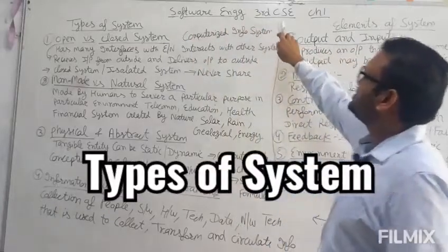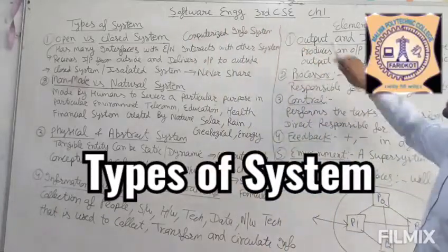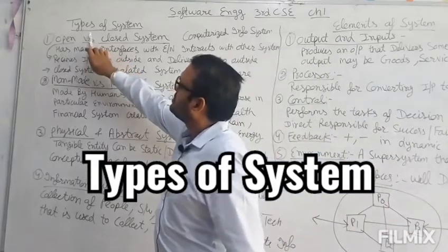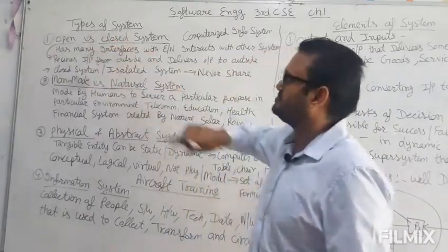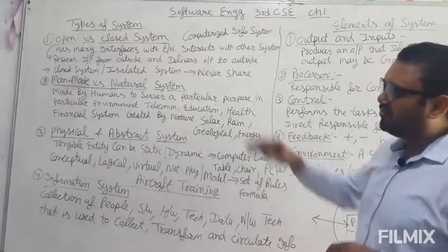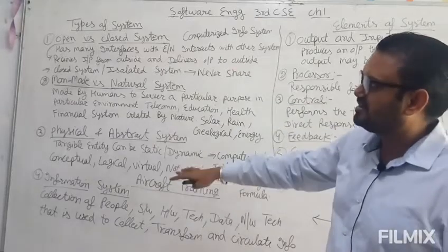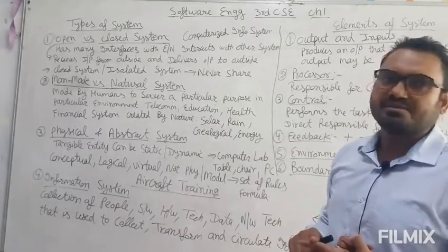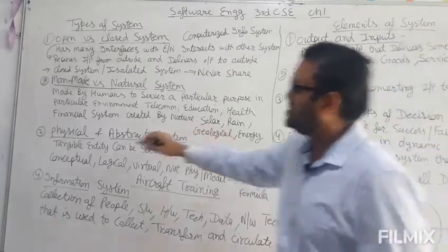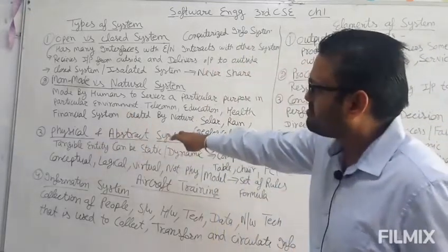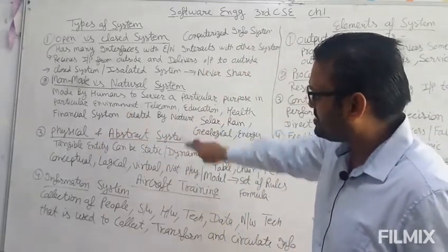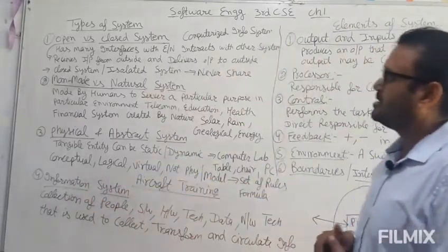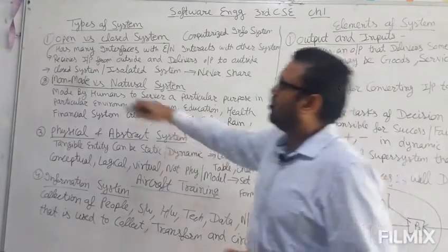Engineering 3rd semester, CSC, chapter number one: Types of Systems. There are basically four types of a system: open and closed system, man-made versus natural system, physical and abstract system, and number four is information system.